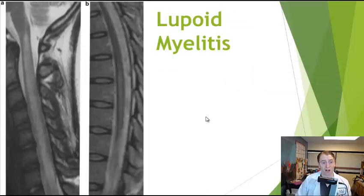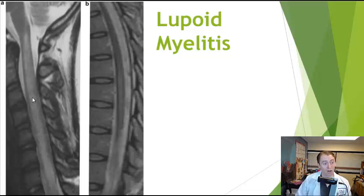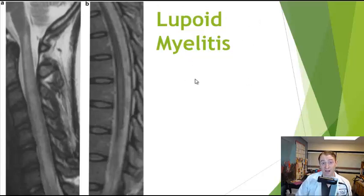People with other autoimmune diseases can also get myelitis. This is a person with lupoid myelitis — lupus associated with inflammation of the spinal cord — which often also causes longitudinally extensive lesions. You can see this T2-bright lesion in the cervical cord. Historically, many cases of lupoid myelitis were actually neuromyelitis optica, because those two diseases are often associated with each other.